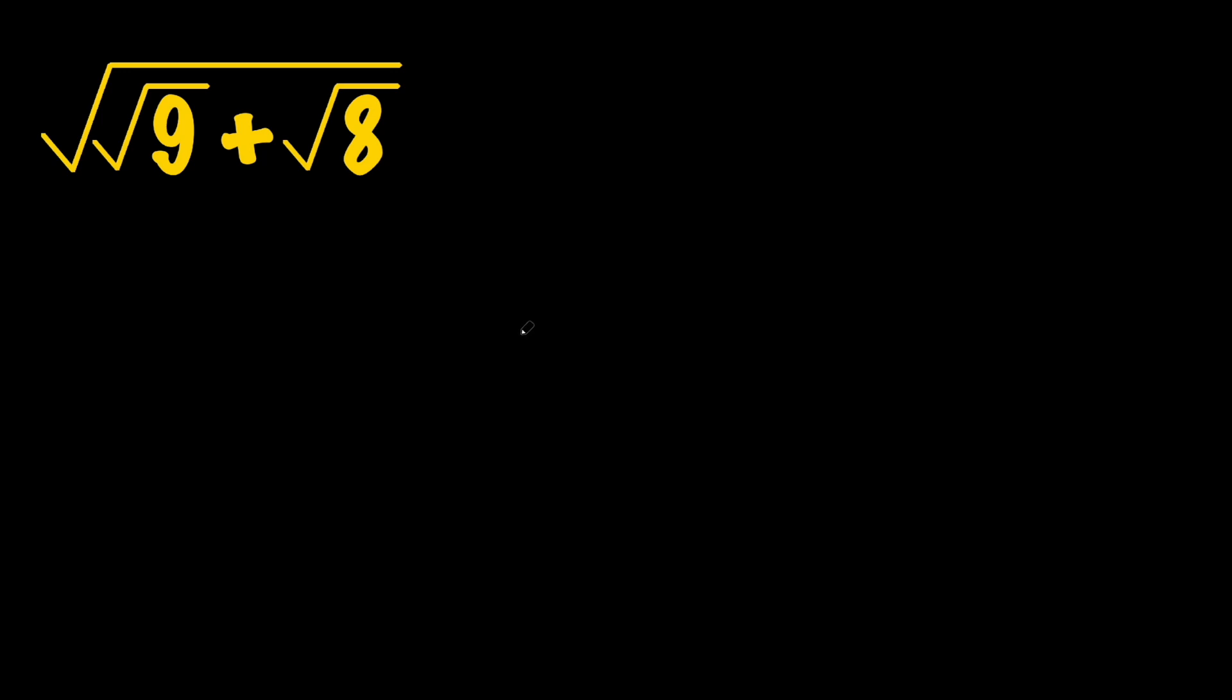Today we're going to be simplifying a radical expression. We are given the square root of root 9 plus root 8, and we're supposed to simplify this as much as possible.